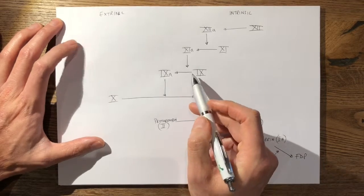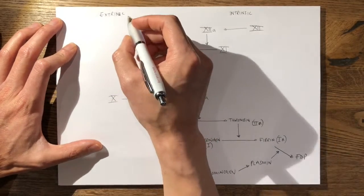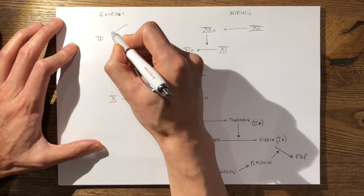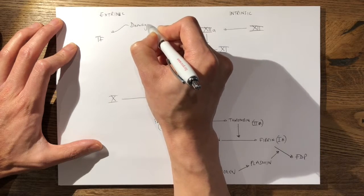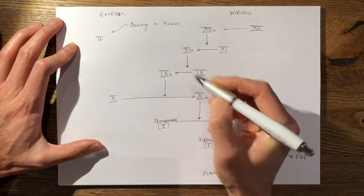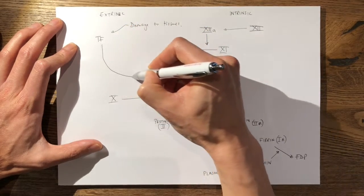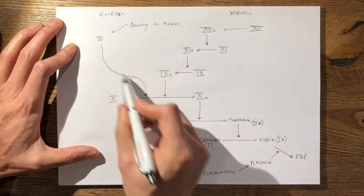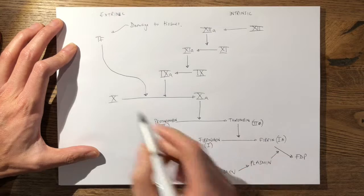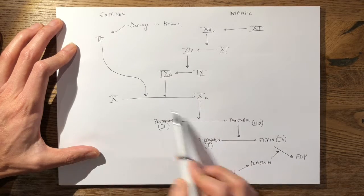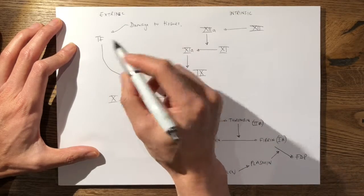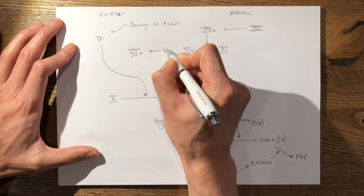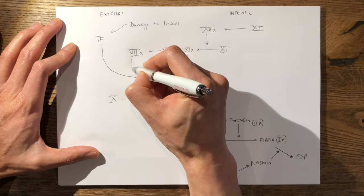Coming to your extrinsic pathway — if you have damaged tissues you get a release of tissue factor. This is from mechanical damage to tissues. Your tissue factor itself promotes the conversion of factor 10 to factor 10a, and therefore from the intrinsic pathway it continues into the common pathway. The common pathway starts from factor 10 onwards. In addition to your tissue factor from damaged tissues, you have factor 7a which comes from factor 7 in your extrinsic pathway.